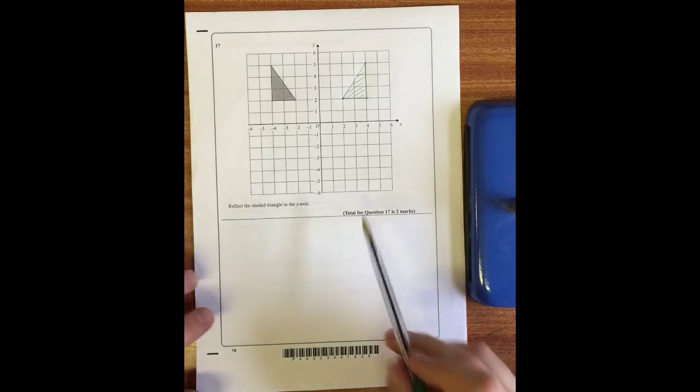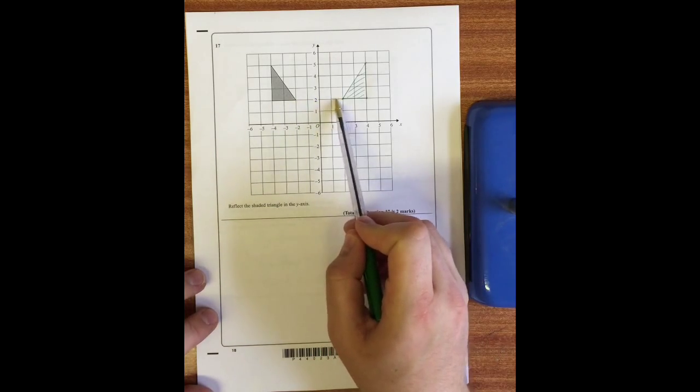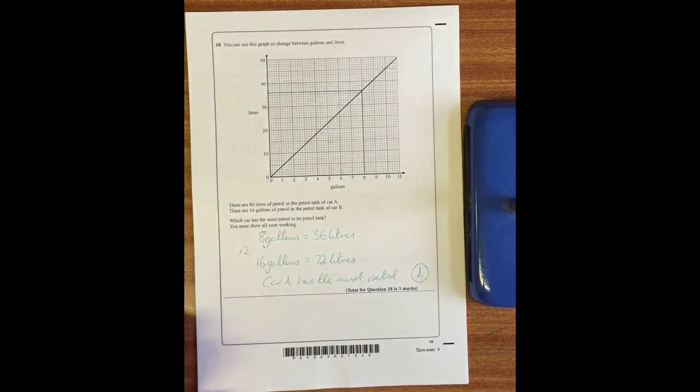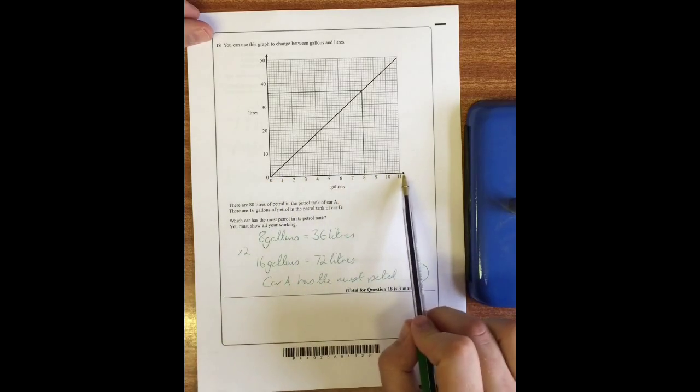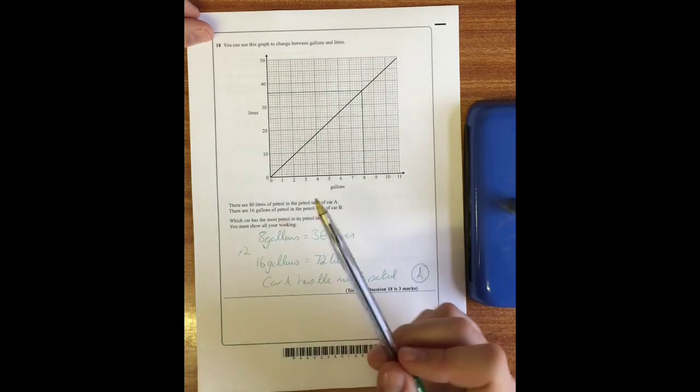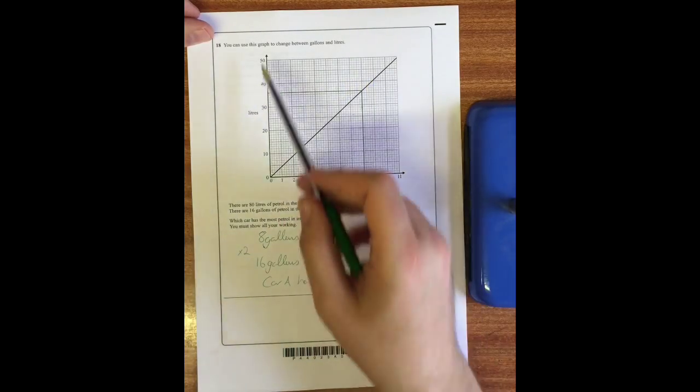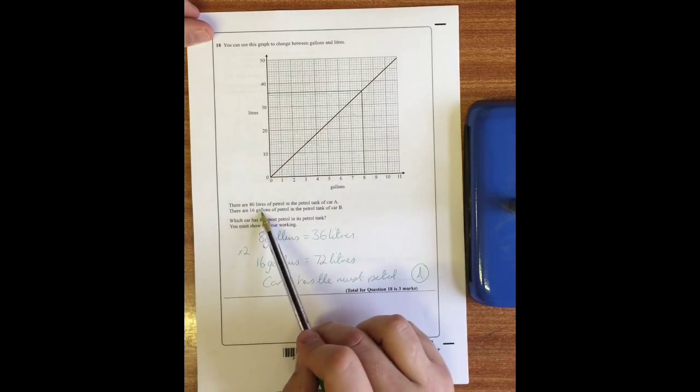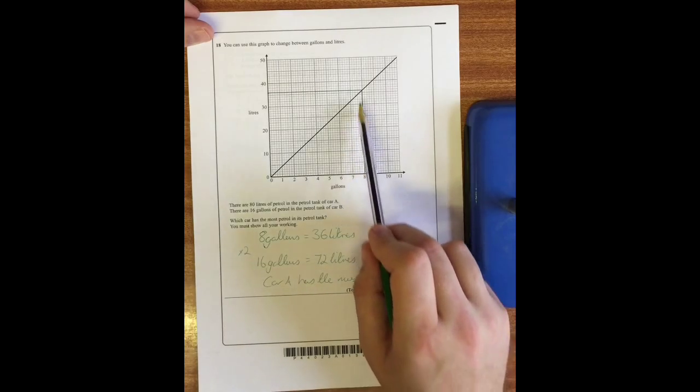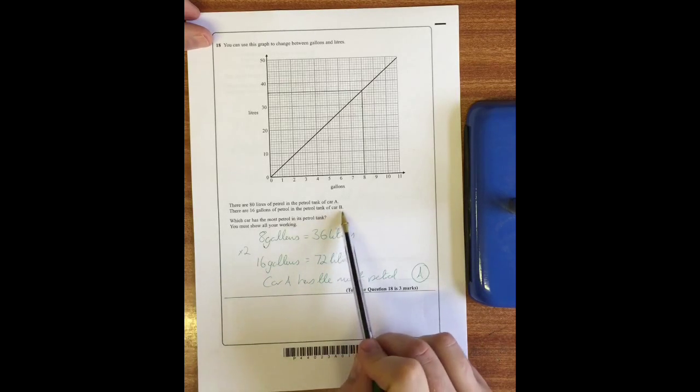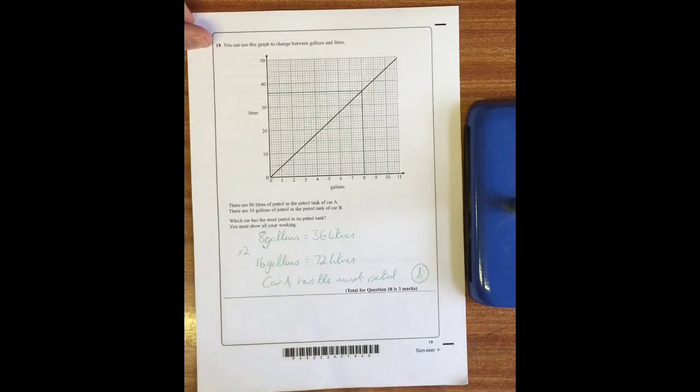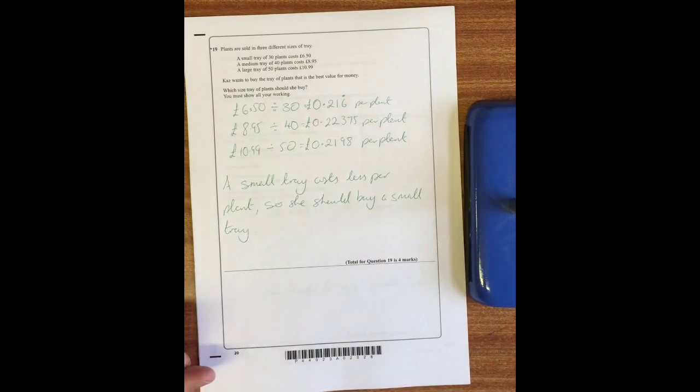Question 17: reflect the shaded triangle in the y-axis. This is the y-axis down here. It's two squares away so I need to reflect it two squares away again into there. Question 18: there are 80 liters of petrol in the tank of car A and 16 gallons in car B. Which car has the most petrol in the tank? Well you can see that the gallons doesn't go up to 16 and the liters doesn't go up to 80, so we've got a choice here. We can either convert to liters or we can convert to gallons. I've chosen to work out eight gallons to be 36 liters using the graph, so if I times that by two I get 16 gallons is 72 liters. So car B has 72 liters, so car A must have the most petrol.